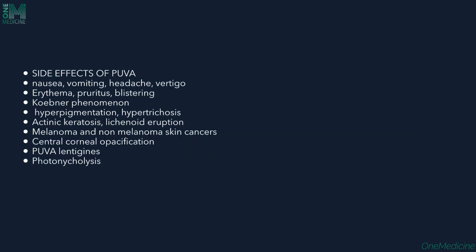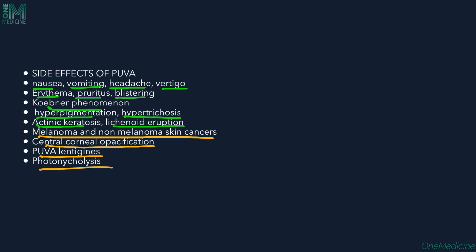Immediate side effects of PUVA include nausea, vomiting, headache, vertigo, erythema, pruritus, and blistering. Other side effects include Koebner's phenomenon — similar lesions occurring elsewhere in the patient — hyperpigmentation, hypertrichosis, actinic keratosis, and lichenoid eruptions.